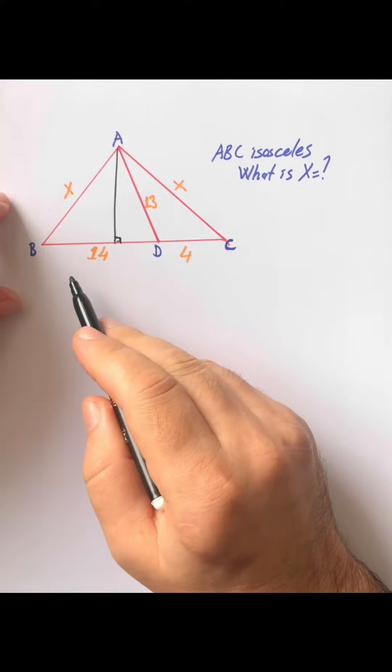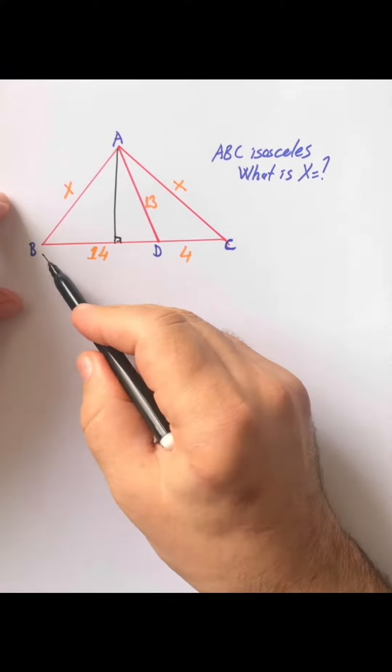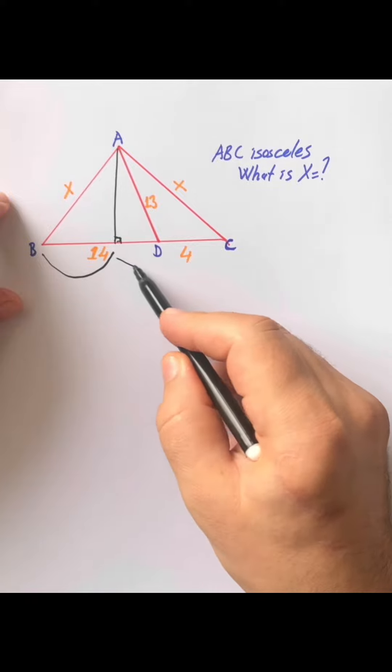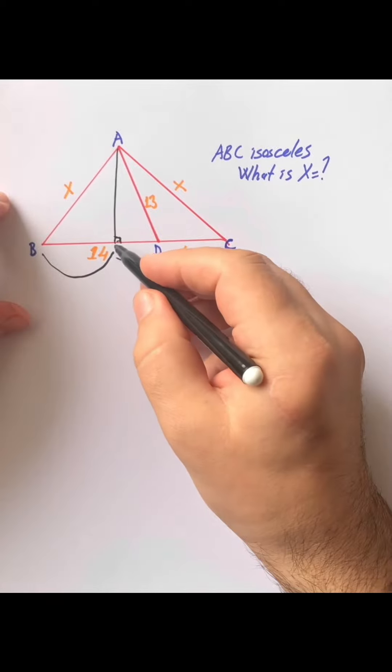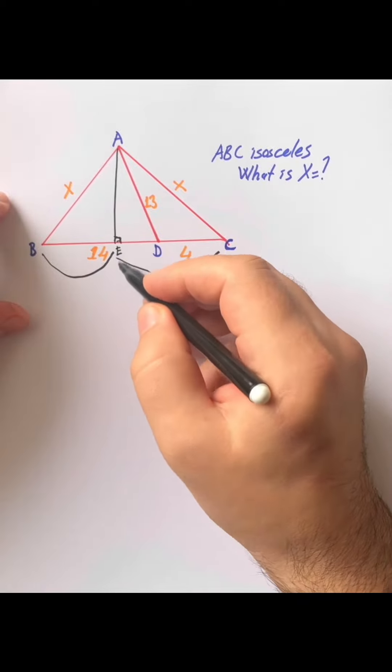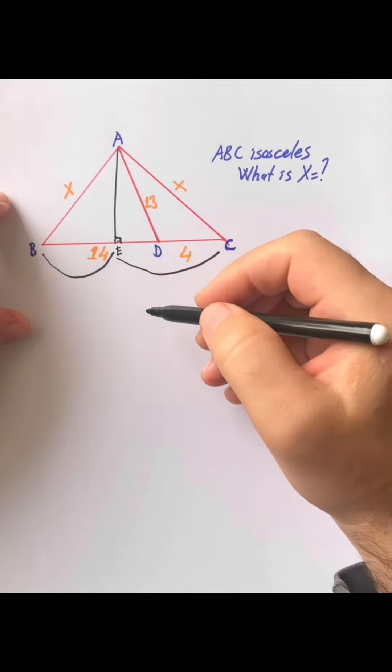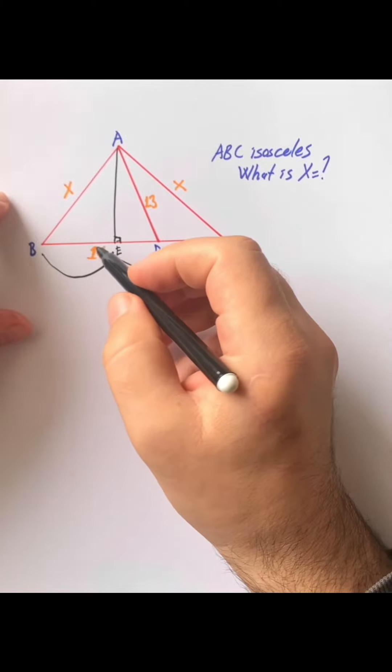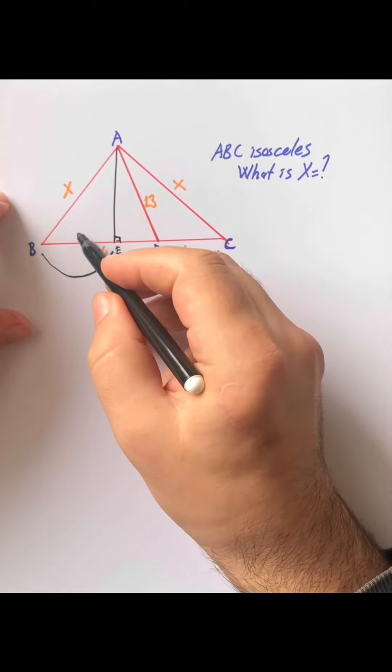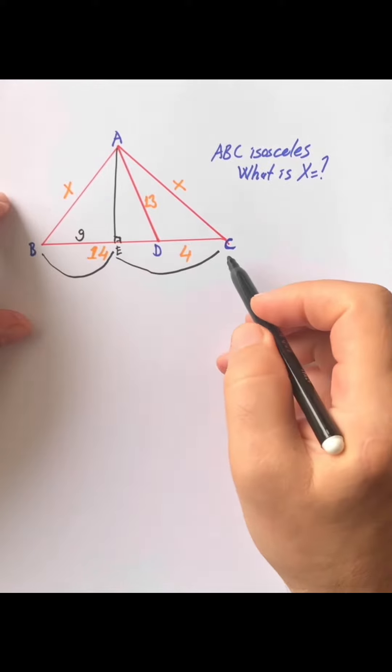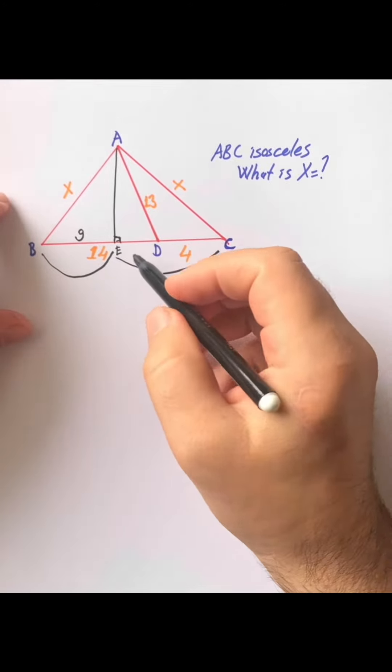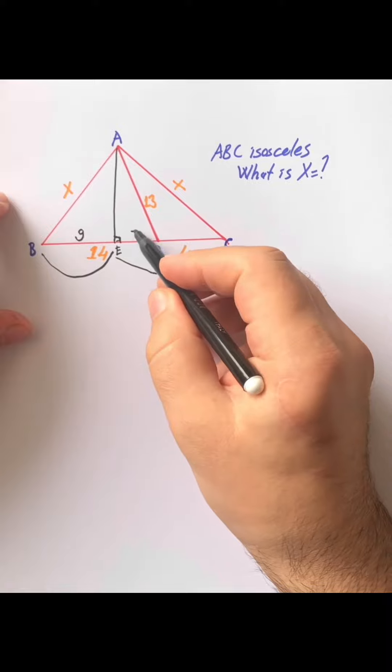So these two parts are equal. I am going to call here E point. Therefore, BE is nine units. So ED is five units.